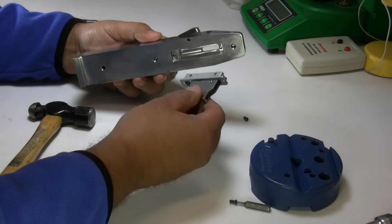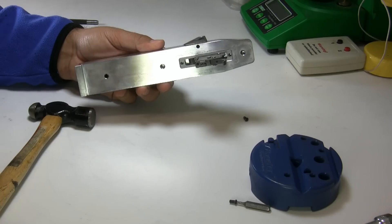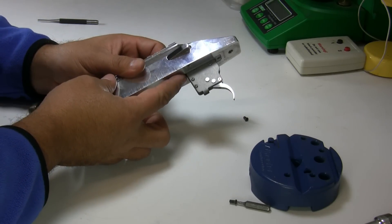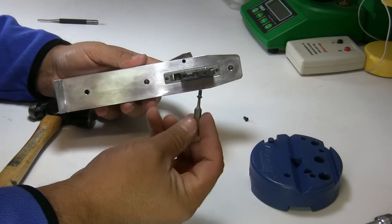At that point, you simply drop the trigger hanger in the action and put the screws back in.